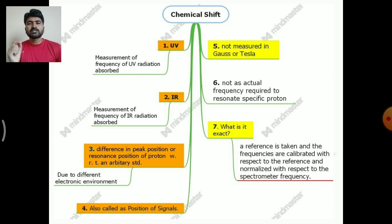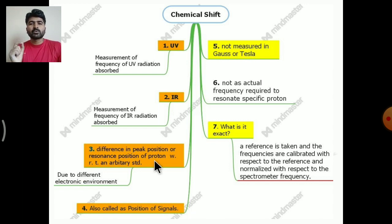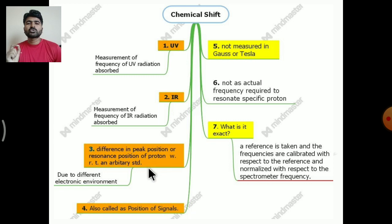The chemical shift is different for different types of protons, or non-equivalent protons. This is due to the difference in the electronic environment between two non-equivalent protons, as well as the difference in electron density surrounding the protons in TMS compared to the protons present in the organic molecule. This chemical shift is also called the position of the signals.